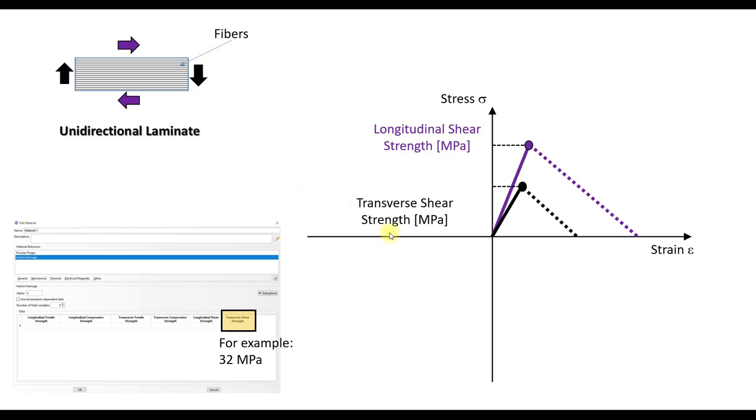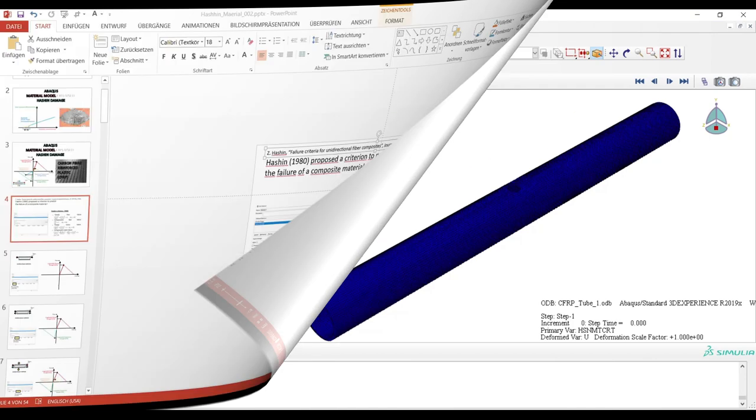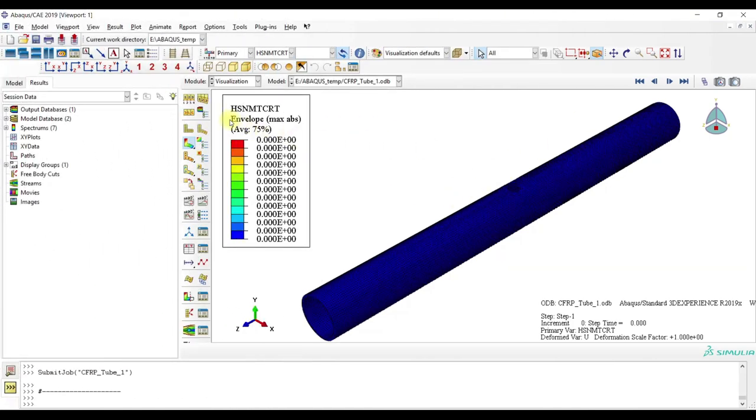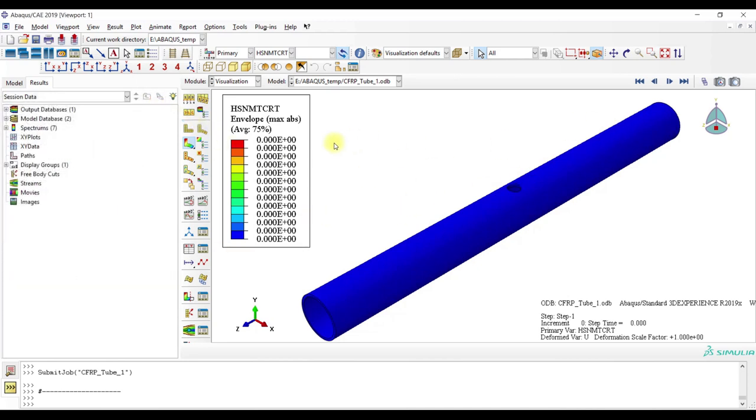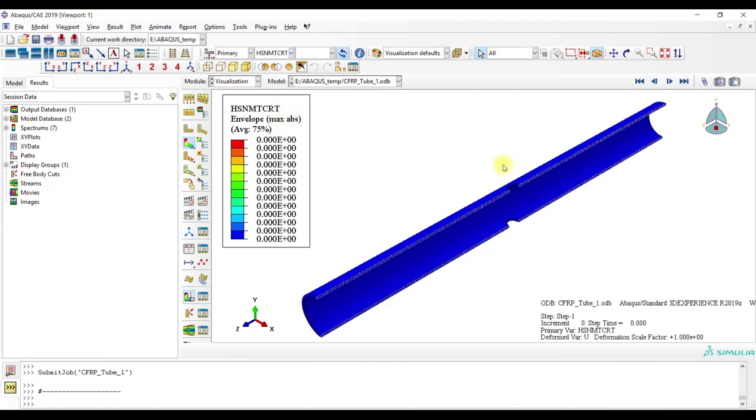Now let's take a look at the Abaqus result for Hashin damage. Here we have a composite tube, which is very thick. It is loaded by axial compression, and here are the variables: Hashin fiber compression, Hashin fiber tension, Hashin matrix compression, and Hashin matrix tension. Now let's take a closer look.